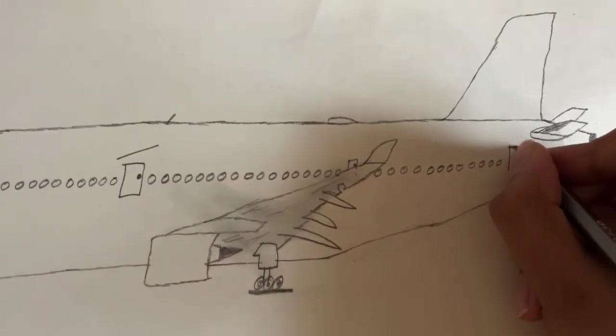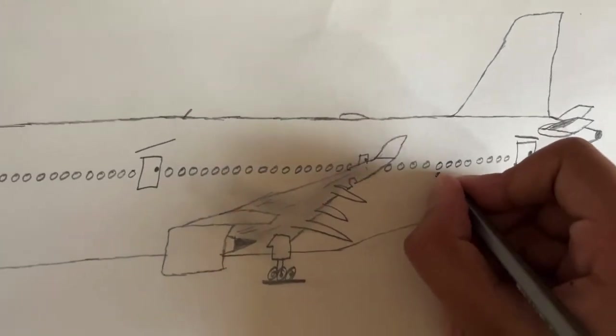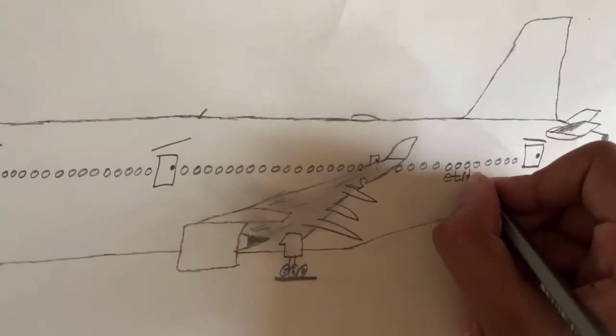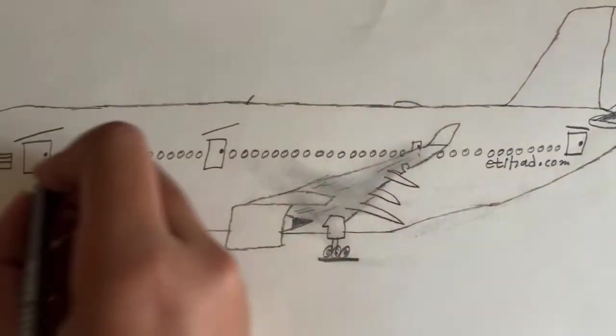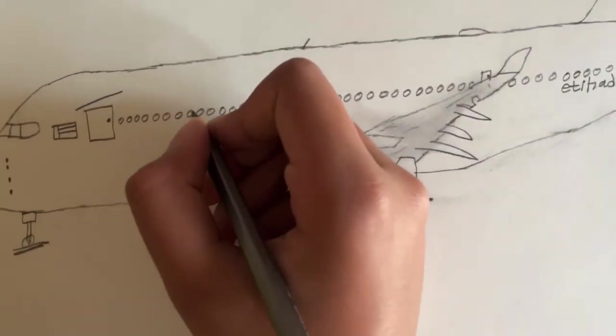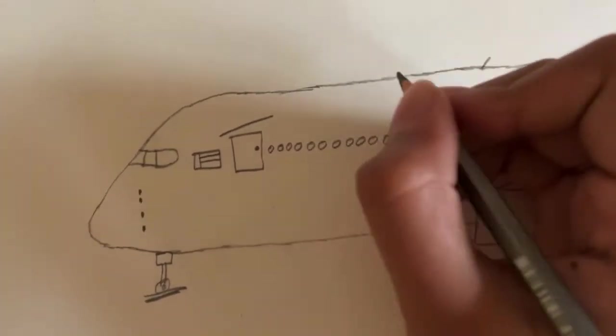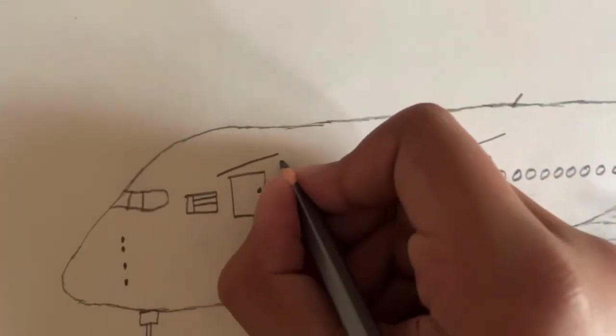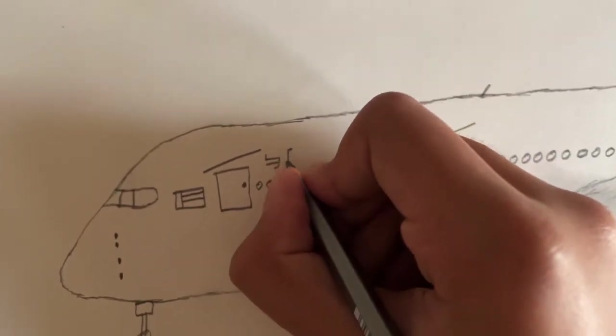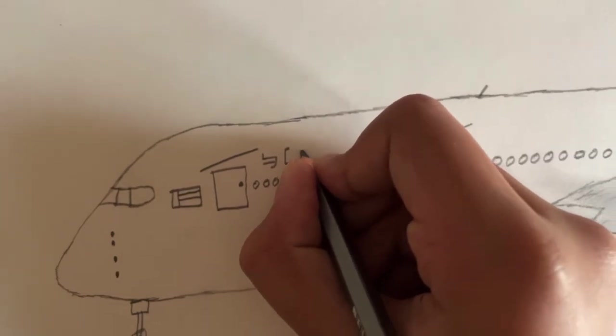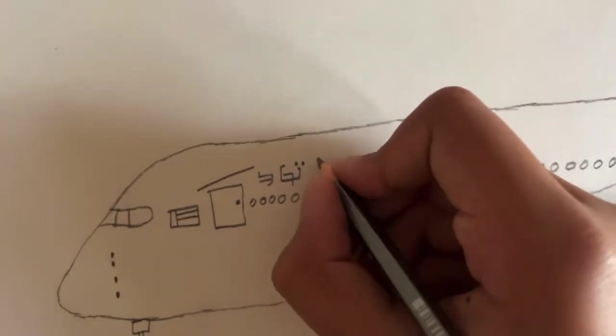And now this is the back door of the A350. And now we will draw the Etihad logo letters and some Arabic words here, like this, drawing down now.